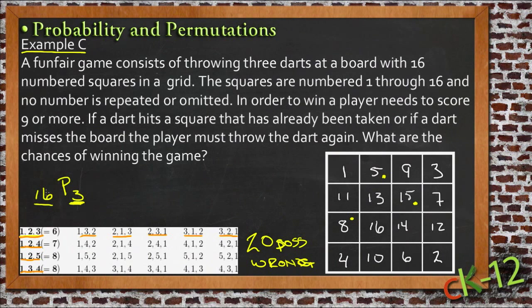So in other words, if I start at 16 and I take 16 and 15 and 14, the first three numbers, and multiply them together, 16 times 15 times 14, I get 3,360.